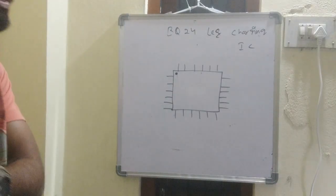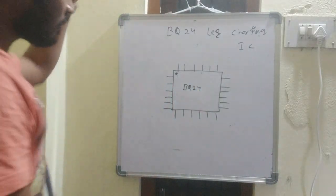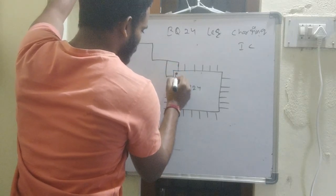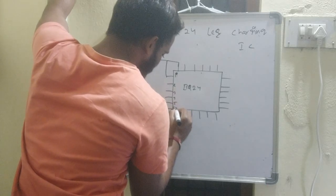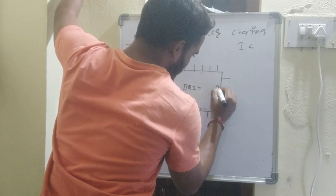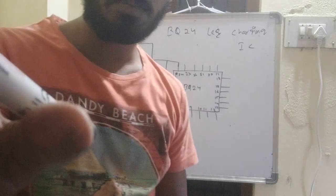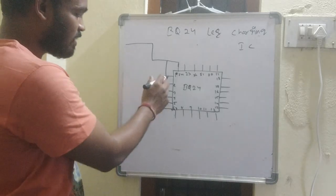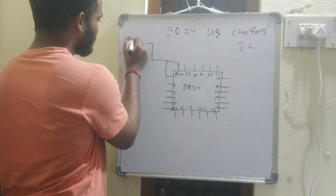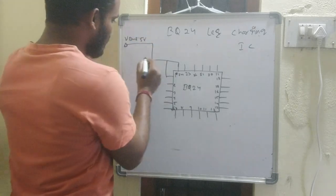Okay friends, BQ24 leg IC — the IC has 24 legs. So the input monkey: first input. Counting 1, 2, 3, 4, 5, 6, 7, 8, 9, 10, 11, 12, 13, 14, 15, 16, 17, 18, 19, 20, 21, 22, 23, 24. So the first number pin and the 24th number pin is VBUS — meaning mobile charging, five volts.